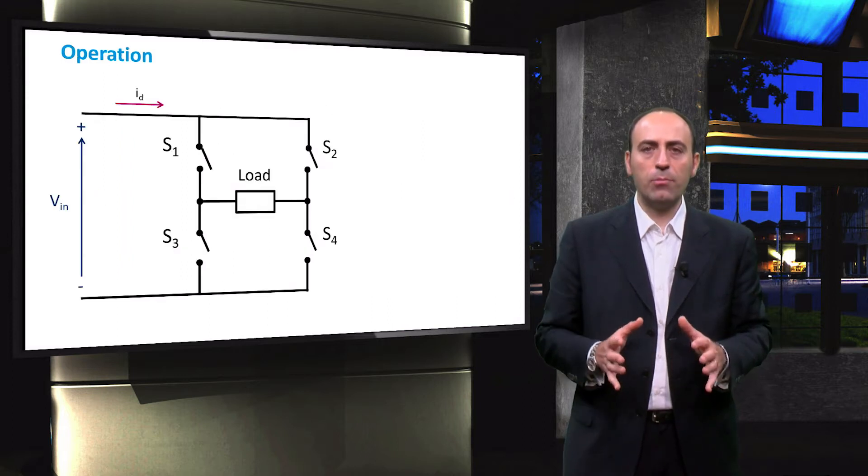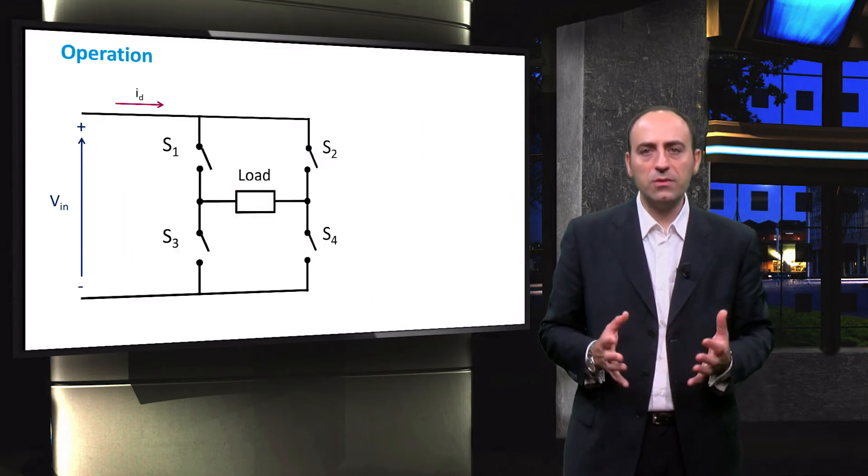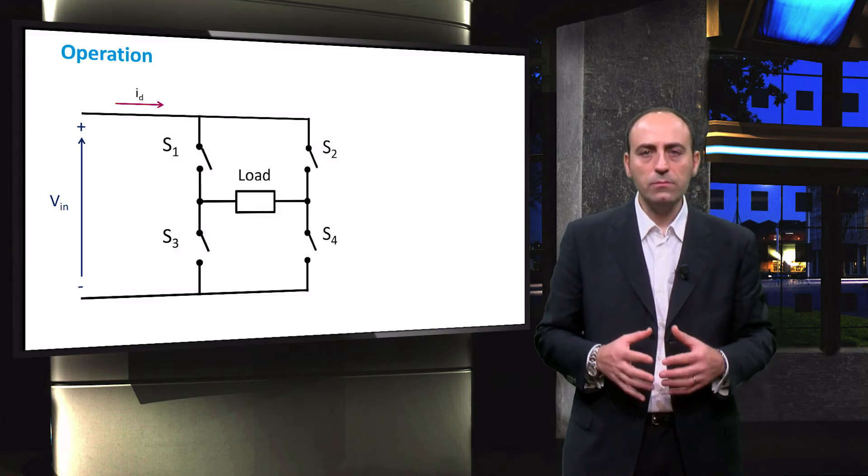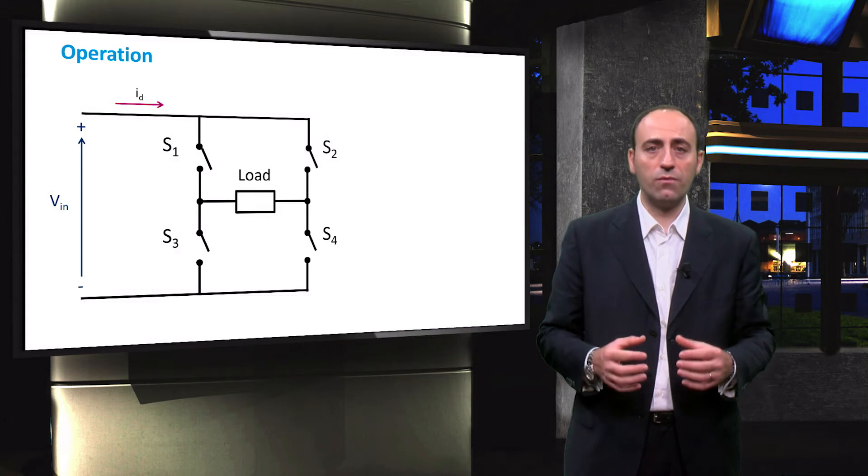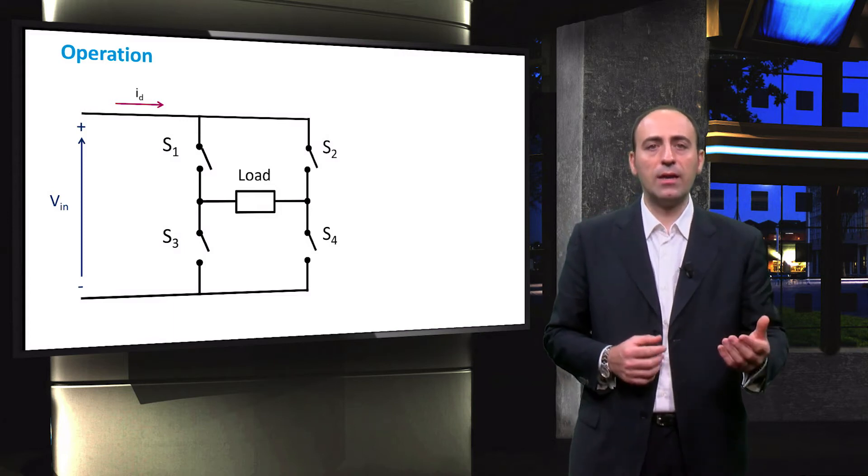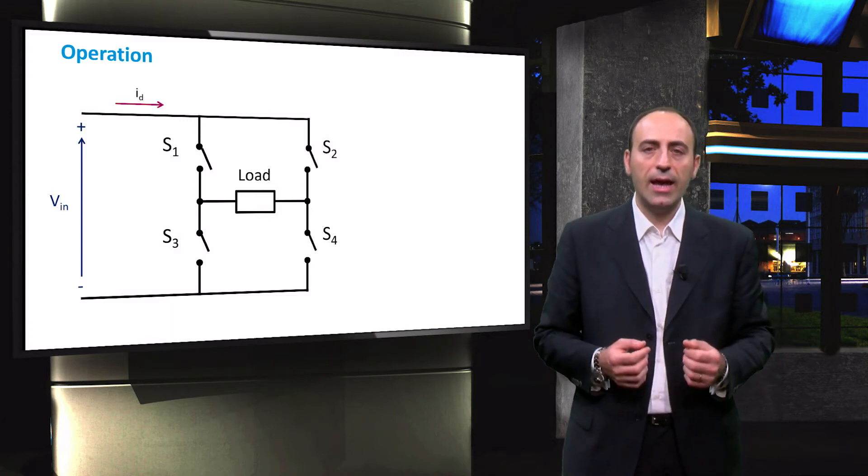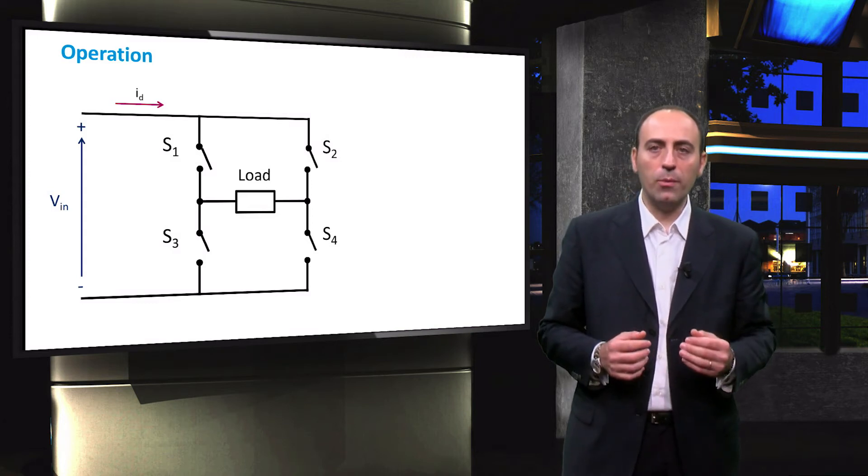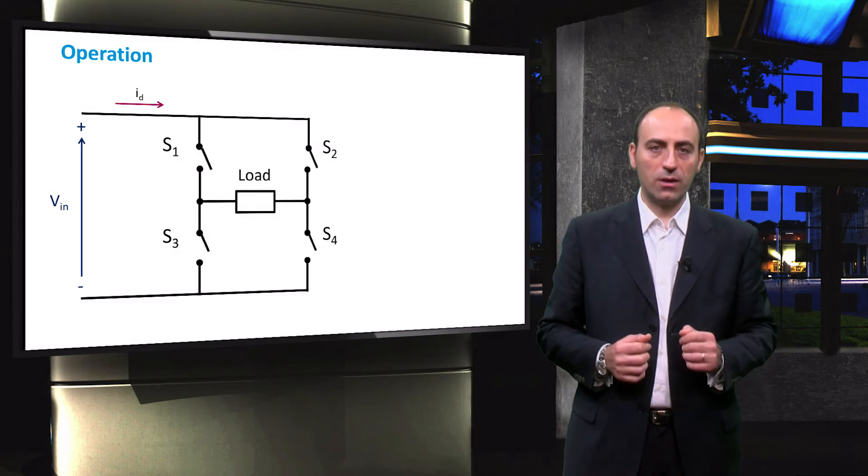A basic example of operation of the H-bridge is rather similar to the one seen in the DC-DC converter topologies. There are two possible switch configurations. Either S1 and S4 are closed, and S2 and S3 are open, or S1 and S4 are open, and S2 and S3 are closed.